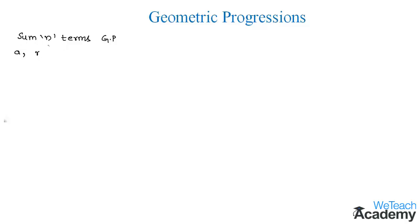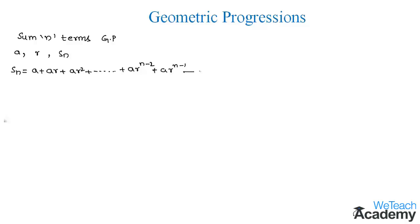If we denote the sum of a geometric progression by Sn, then we have Sn equal to a plus ar plus ar squared plus so on, plus ar to the power n minus 2, plus ar to the power n minus 1. Let us consider this as equation 1. Now let us multiply r on both sides of this equation.